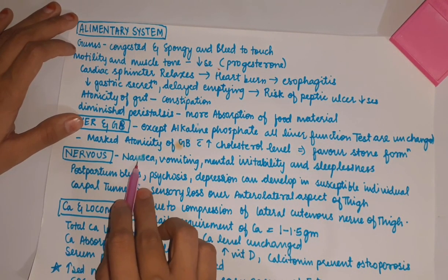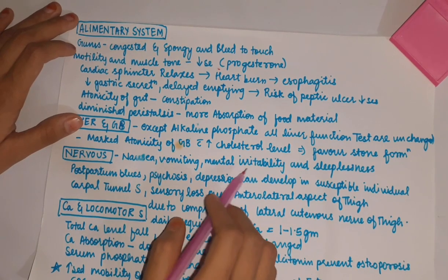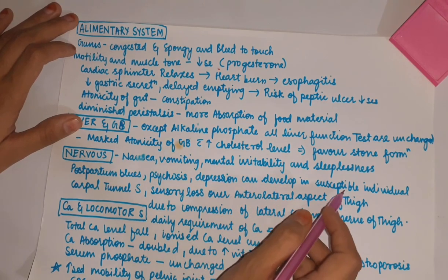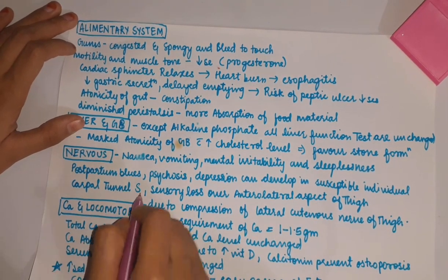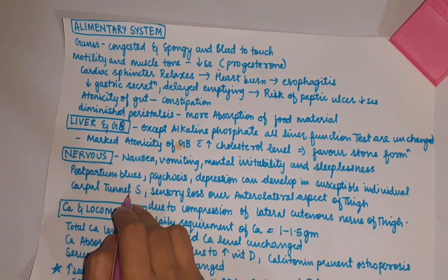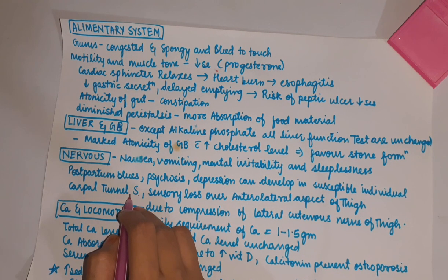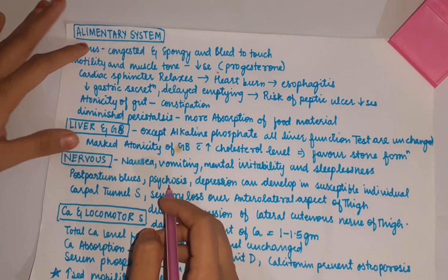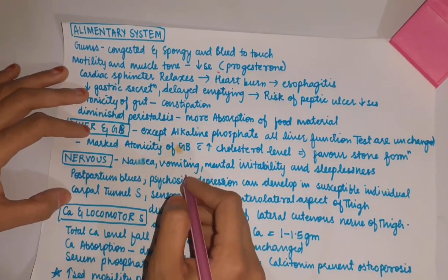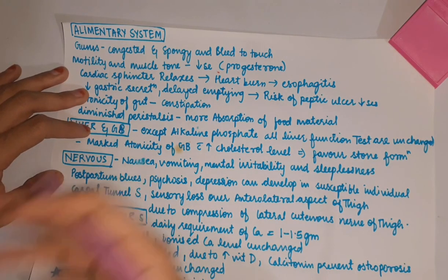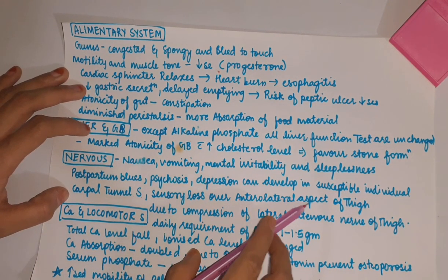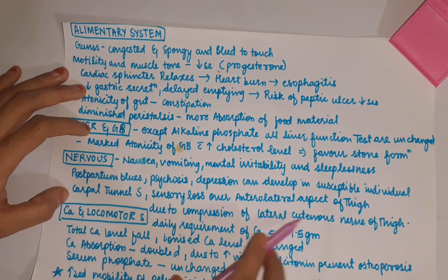Nervous system: there occurs nausea, vomiting, mental irritability, and sleeplessness. In the postpartum period, blues, psychosis, and depression can develop in susceptible individuals. Carpal tunnel syndrome is present in a few women; the cause is not known but is seen more in obese women, possibly because edema or obesity can easily compress the tunnel. There is also sensory loss over the anterolateral aspect of the thigh due to compression of the lateral cutaneous nerve of the thigh.